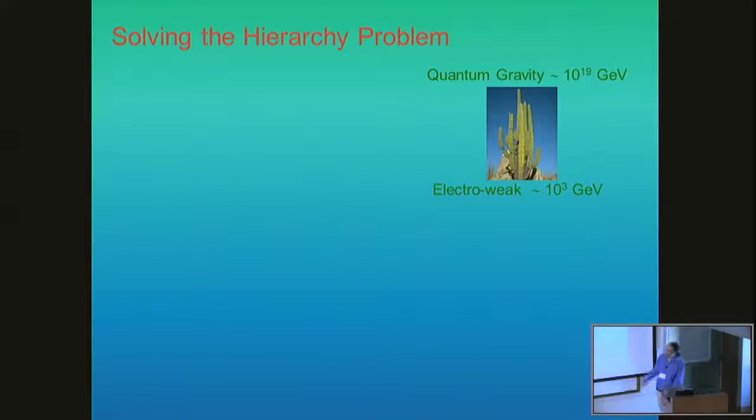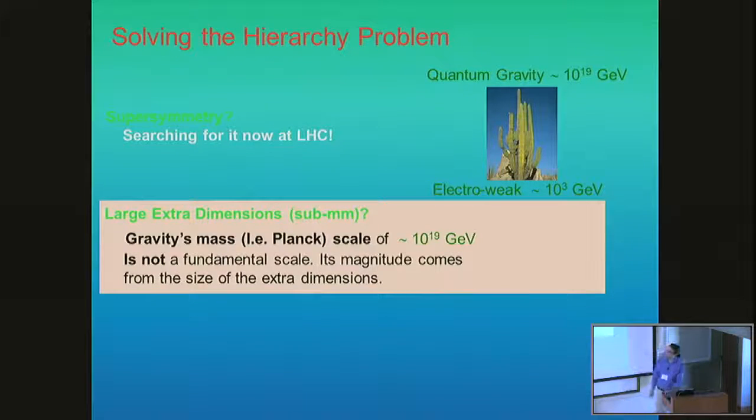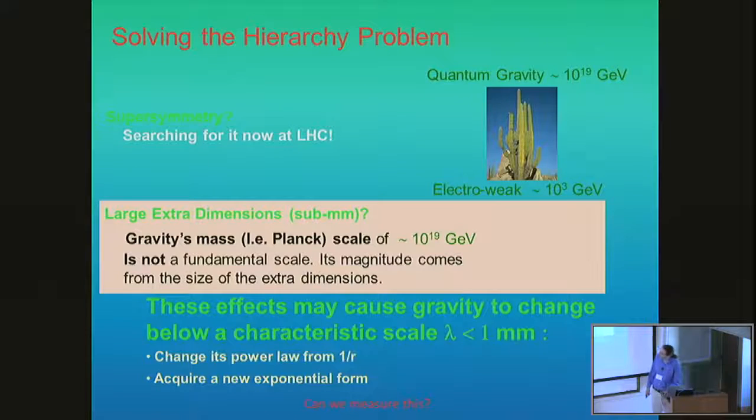This has led theorists to suggest solutions to this puzzle, the most popular of which is supersymmetry, currently being looked for at the LHC. Other ideas have been large extra dimensions in space, where this apparent high scale of quantum gravity might not be fundamental but a result of gravity getting diluted as it propagates into these extra spatial dimensions. These effects might cause gravity to be different below some characteristic length scale, typically the Compton wavelength of some new particle being exchanged.